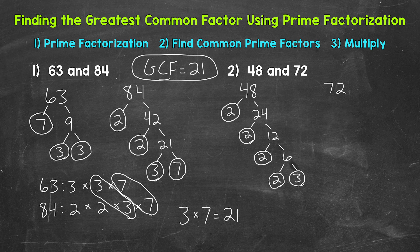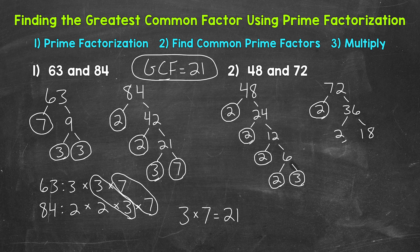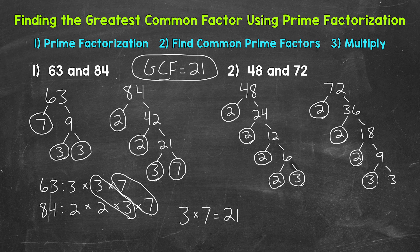Now we need the prime factorization of 72. Let's start with the factors of 2 and 36. 2 times 36 equals 72. 2 is prime, so we are done there. 36 we can break down: 2 times 18 equals 36. 2 is prime. 18 we can break down: 2 times 9 equals 18. 2 is prime. 9 we can break down: 3 times 3 equals 9, and 3 is prime. We are done with the prime factorization of 72. We can't break that down any further.